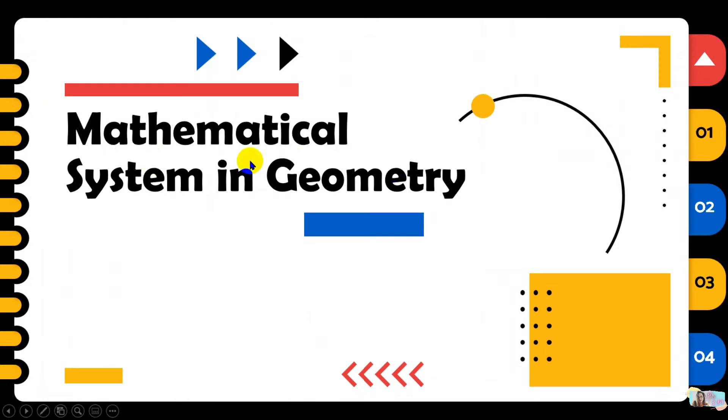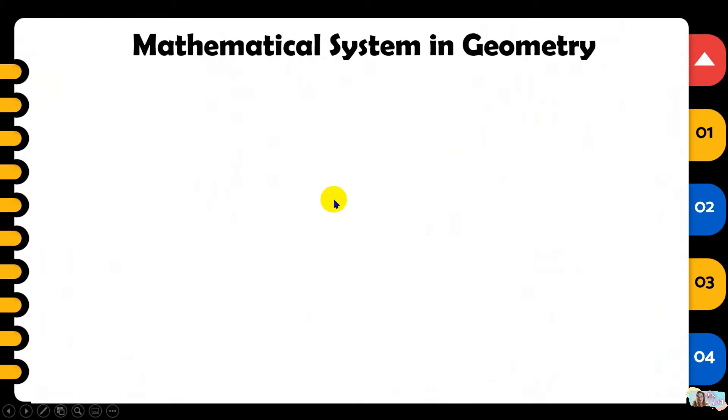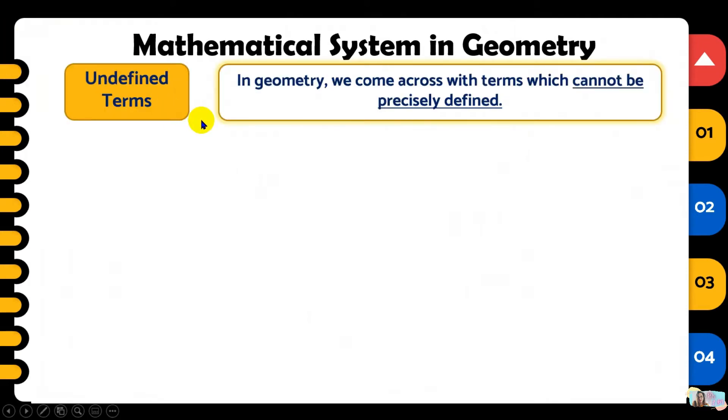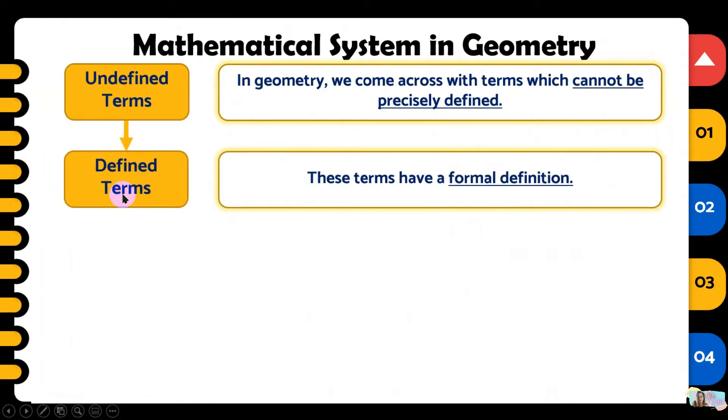To know more about geometry, let us have the mathematical system. It consists of four important terms. First is the undefined terms. In geometry, we come across with terms which cannot be precisely defined. From the word itself, undefined, so it has no definition but we can describe it. This is where everything starts. From here, we have defined terms. These terms have a formal definition.